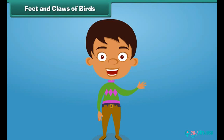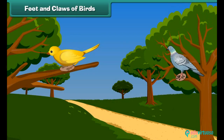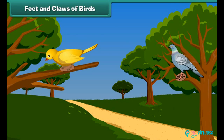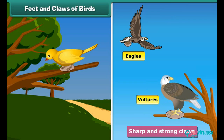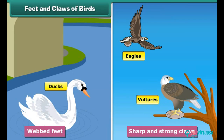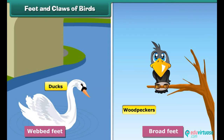Birds walk and hold food with their feet and claws, and different birds use their feet and claws differently. Vultures and eagles have sharp and strong claws to hold small animals, while ducks have webbed feet that help them swim in water. Woodpeckers have broad feet and use them to climb trees.